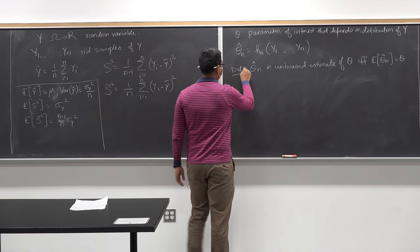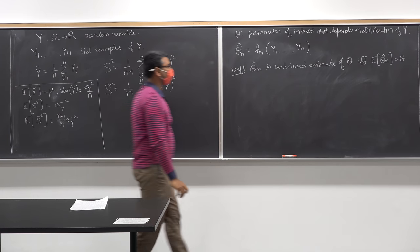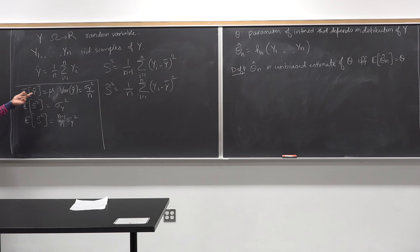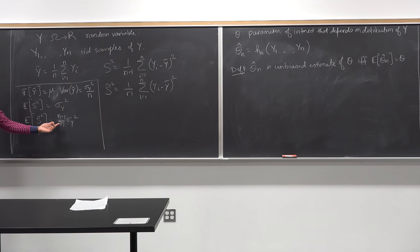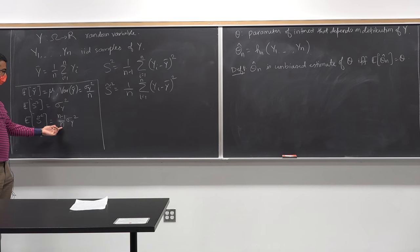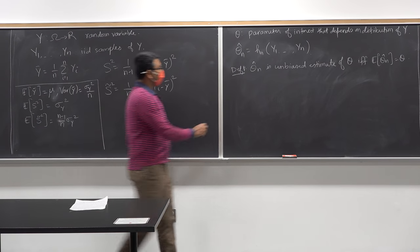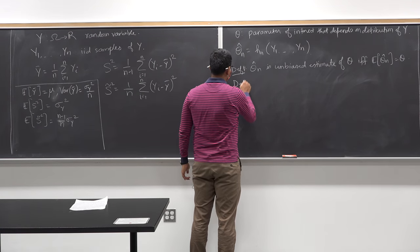Going back to our examples: y-bar is an unbiased estimate of mu — yes. s-squared is an unbiased estimate of sigma_y squared — yes. s-tilde-squared is NOT an unbiased estimate of sigma_y squared — no, because there is an (n−1)/n term; it is a biased estimate. s-squared is the unbiased estimate.